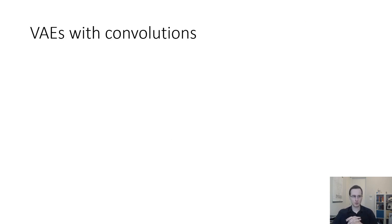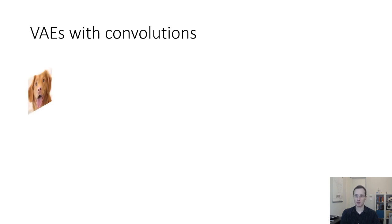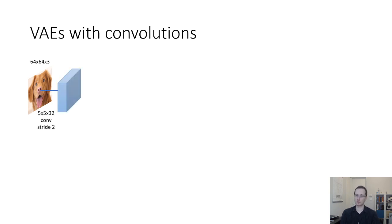Now let's talk about neural network architectures for variational autoencoders, specifically how to design VAEs with convolutions. Let's say your image is 64 by 64 by 3 with three color channels. Your first layer might be a 5 by 5 conv with 32 channels and a stride of 2 to reduce resolution, giving a 30 by 30 by 32 feature map.